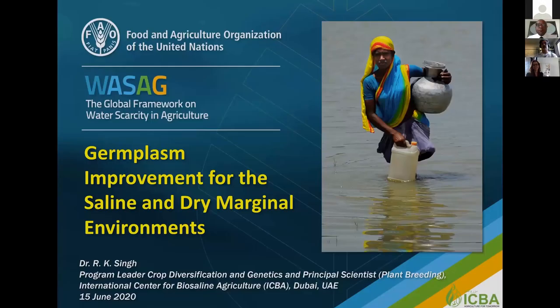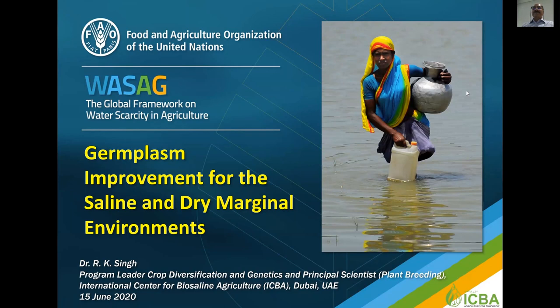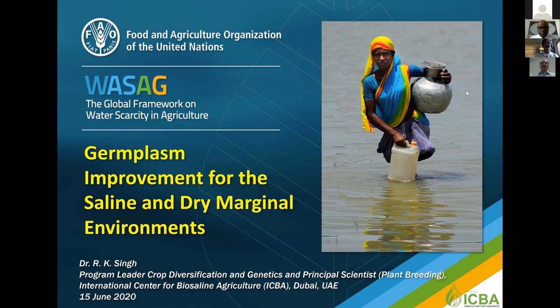Thank you very much, Remy, for the introduction, and thanks to FAO and WASAK for this opportunity. The topic of my presentation is germplasm improvement for saline and dry marginal environments — specifically biophysical marginal environments. What kind of germplasm could you have for such harsh environments? First, we have to see which crops are suitable for these conditions, and quinoa is particularly the outstanding winner. If you look at salinity, four dS/m is the starting point. Quinoa can grow very well up to 20 dS/m, while barley — the most tolerant food crop in our food system — has a threshold salinity of 8 dS/m, compared to quinoa's threshold of around 12 dS/m.